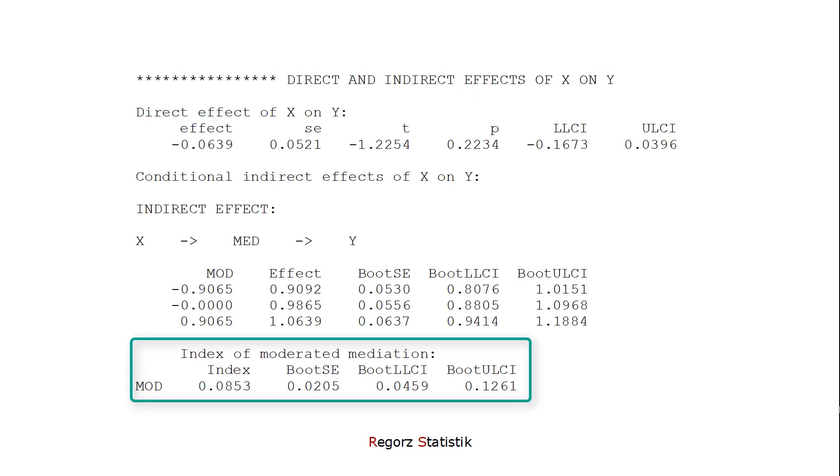We start about two-thirds down in the output with the index of moderated mediation. If the bootstrap confidence interval for this index does not include zero, as in this case, then we have a moderated mediation.